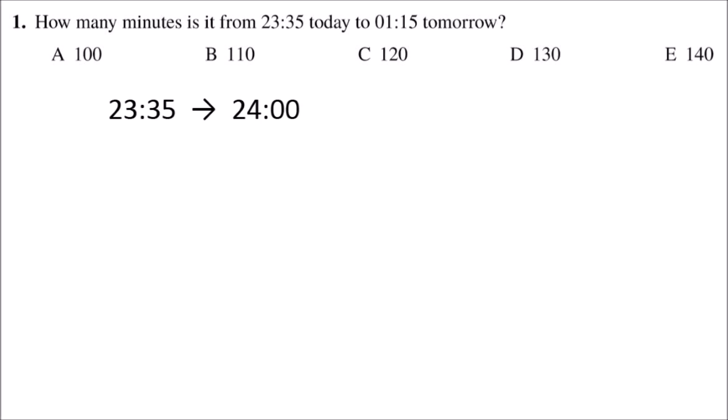So if we first work out how many minutes it takes to go from 23:35 to the next hour, then that will be 60 minus 35 which is 25 minutes, and so that 25 minutes takes us to 24 hours or zero hours.